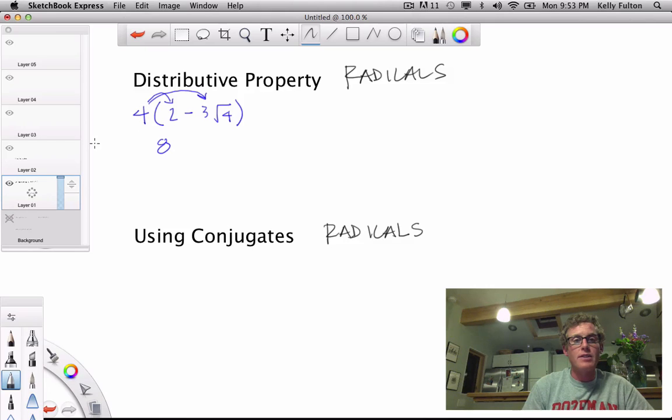Well, to think about this in a slightly different way, we need to consider 4 as the same thing as 4 root 1. And what that means is I'm going to multiply the radicals by radicals, and then the outsides of the radicals are just going to be multiplied by the outsides of the radicals.